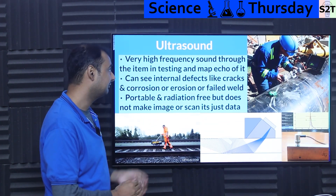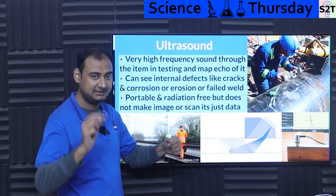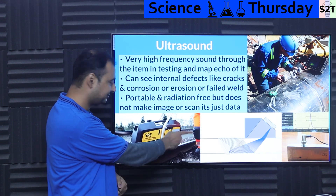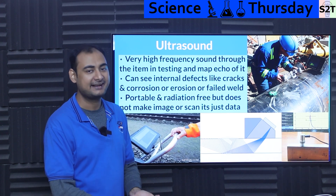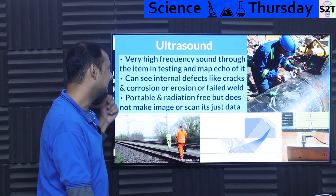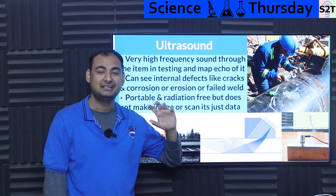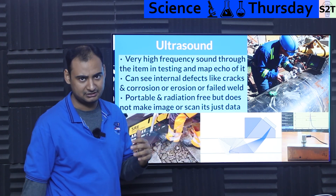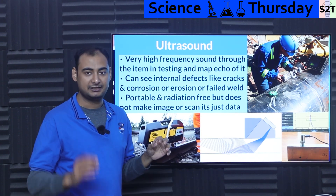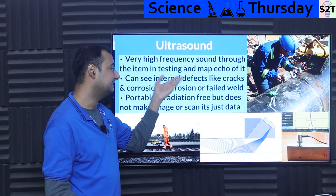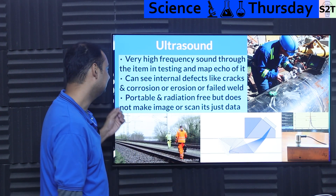Then we come to ultrasound. Most of you are familiar with it — there's a very good chance ultrasound has been used on your body. The same thing is done on everything, especially railway tracks. It's a very high frequency sound — 'ultra' simply means above our hearing ability, so 30 kHz or above, possibly into the megahertz range. We send it into items and map out the echo — it's basically sonar.